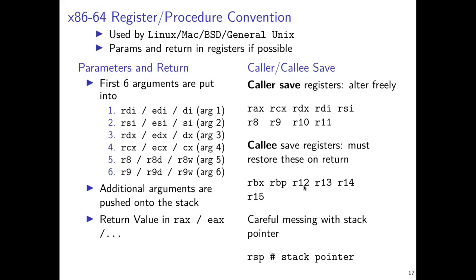So if during my function I decide I need to use R12, I should save it in the stack and restore it before returning to main, because main will expect whatever it put in R12 to still be there. Return values for functions in x86-64 are in the RAX family register: 64-bit quantities in RAX, 32-bit in EAX, and so on. Be very careful about messing with the stack pointer itself — as a function goes about its business, if it makes changes to the stack pointer, it will no longer refer to its return address.